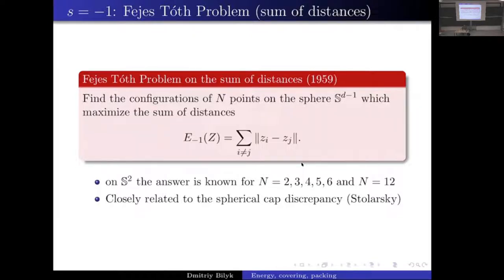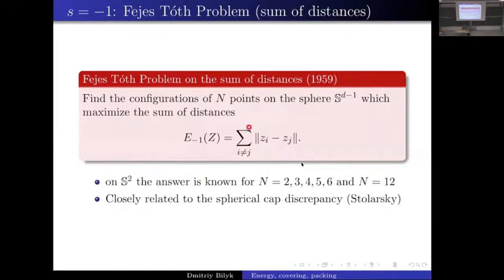The sum of distances, or distance integral, is a very common object in metric geometry. You're trying to maximize the sum of distances, and intuitively this leads to a uniform distribution of points on the sphere. However, already in yesterday's discussion we saw that such intuition can actually be wrong — if you take the Riesz energy with power smaller than negative two, the optimal energy points will not be uniformly distributed; they will collapse to two opposite poles.